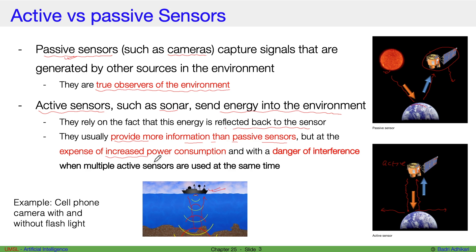So if you have an active sensor, because you have to throw energy out to the environment and then read that energy back, they consume more power.